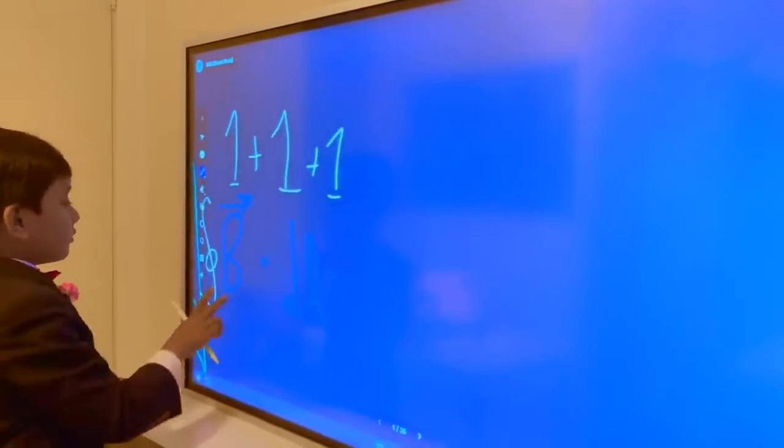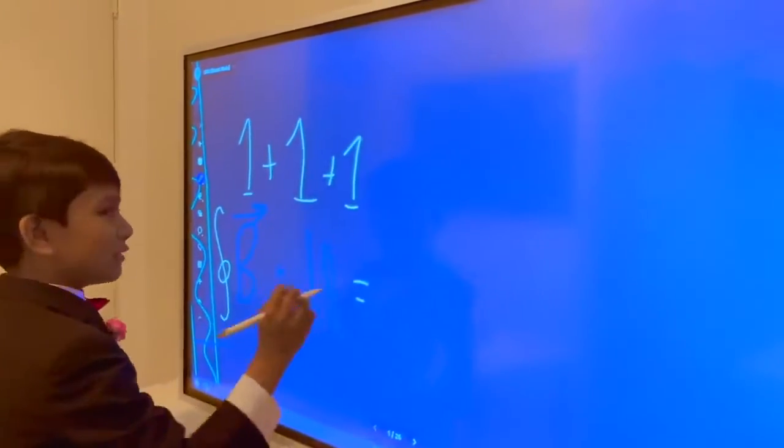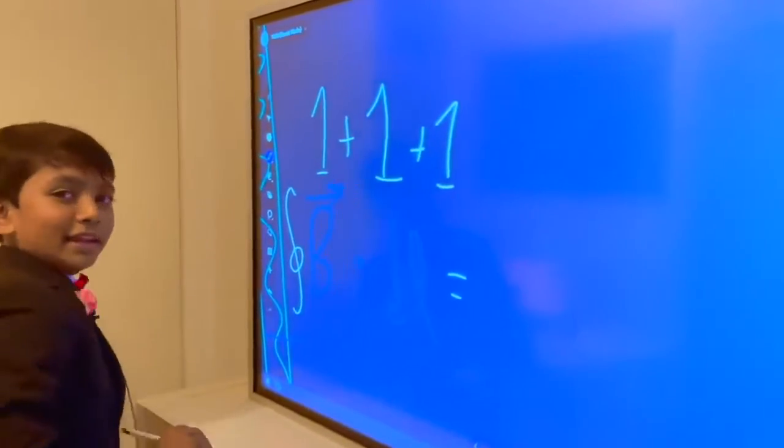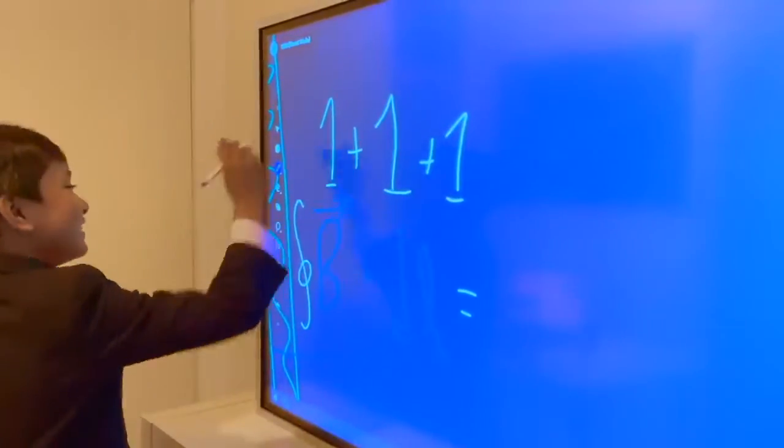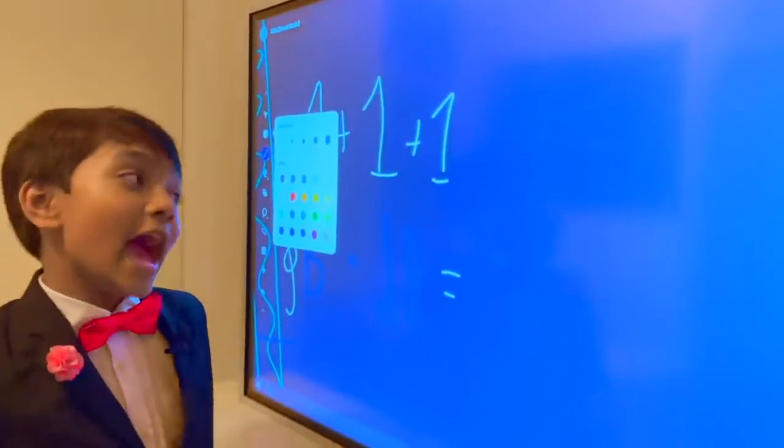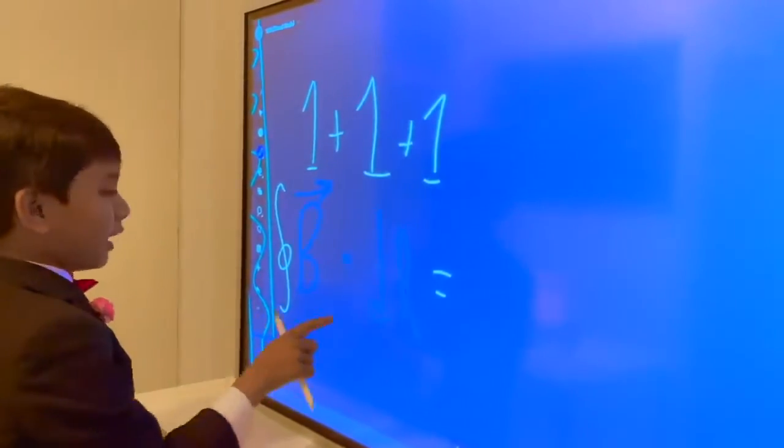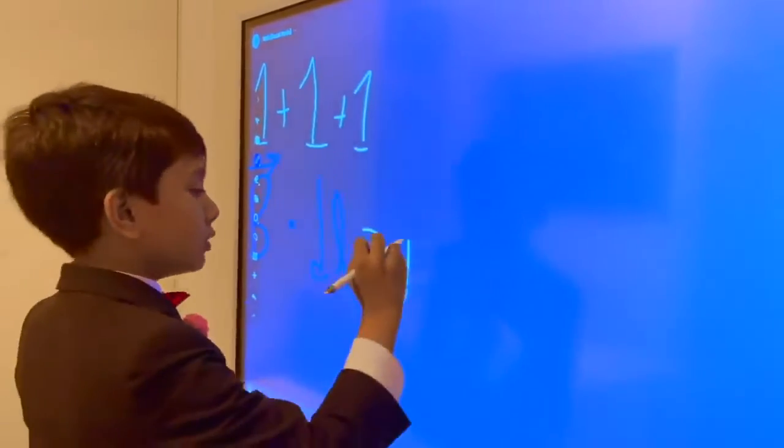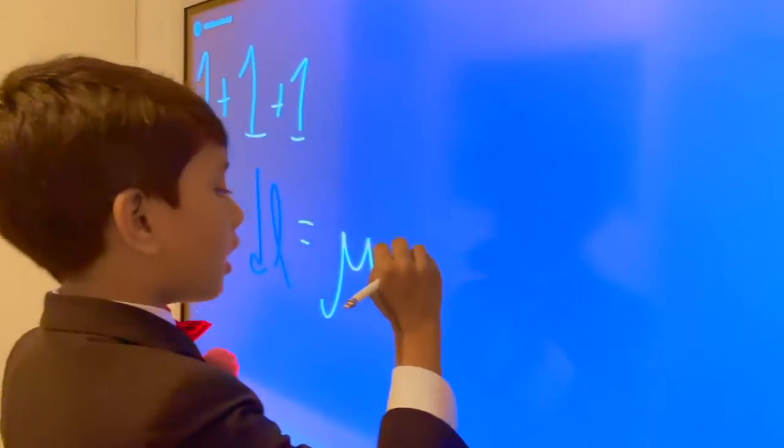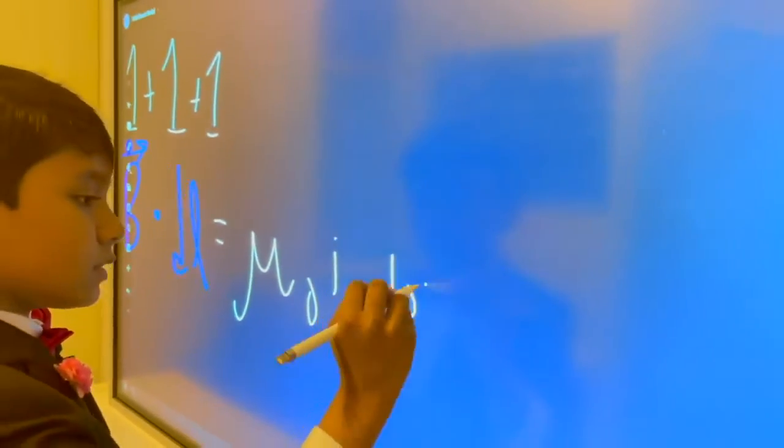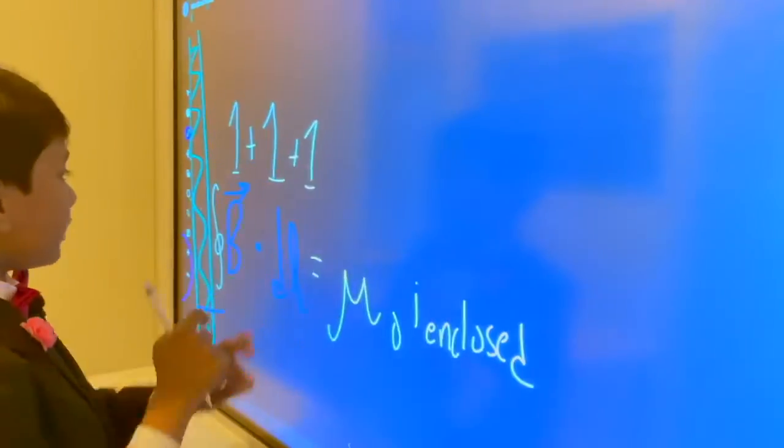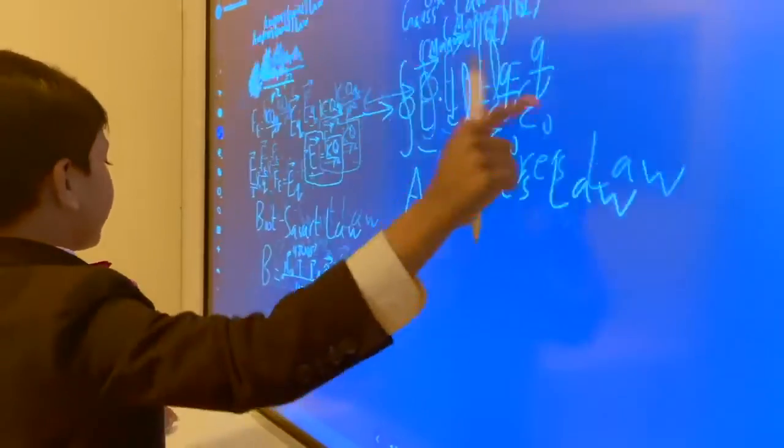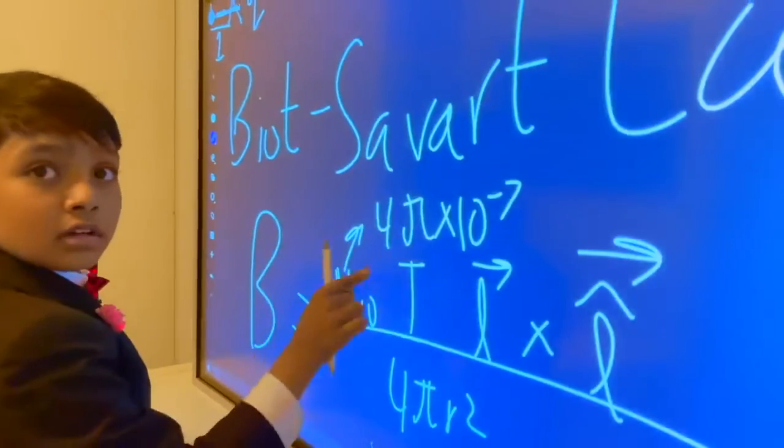Alright. So now we have the closed loop integral, remember, of the Morgie, I mean B dot DL. And then that is always going to be equal to, he said, mu naught I enclosed. Now it's mu naught, our friend from earlier, if you remember him, he was somewhere here. Yeah, this dude.